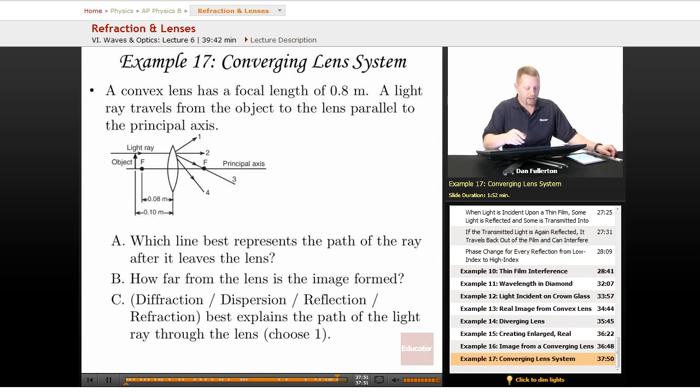One last problem. A convex lens has a focal length of 0.8 meters. A light ray travels from the object to the lens parallel to the principal axis.